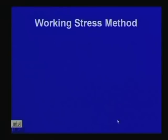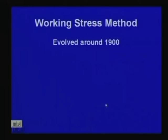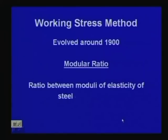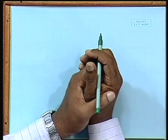What is the working stress method? This evolved around 1900 or the late nineteenth century, and its basic concept is the modular ratio — the ratio between the modulus of elasticity of steel and the modulus of elasticity of concrete. To explain this, consider a beam where we need to find the dimensions of a rectangular section having width B and depth D.